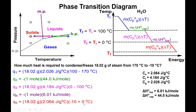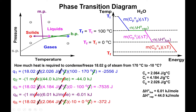For q2 and q4, which are the flat plateau regions, you use the corresponding ΔH value multiplied by the number of moles. You convert grams of water to moles using the molar mass, and since we're going down in temperature, both must be multiplied by negative one. Units cancel to leave joules or kilojoules, and q1, q3, and q5 all naturally come out negative while q2 and q4 become negative via the explicit negative sign.